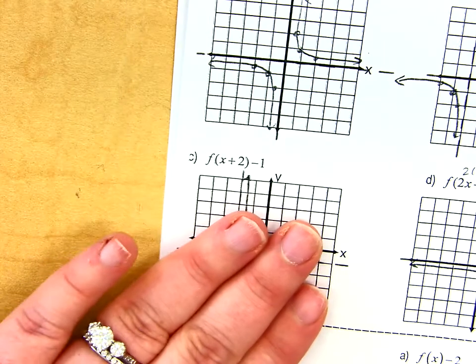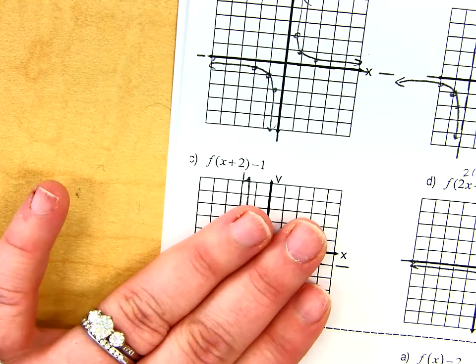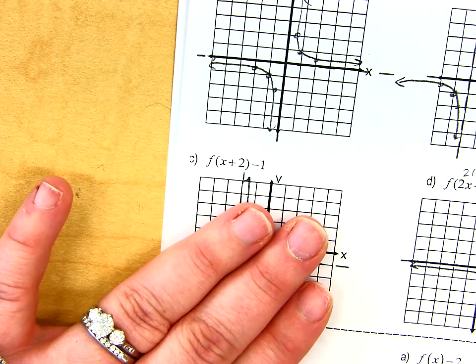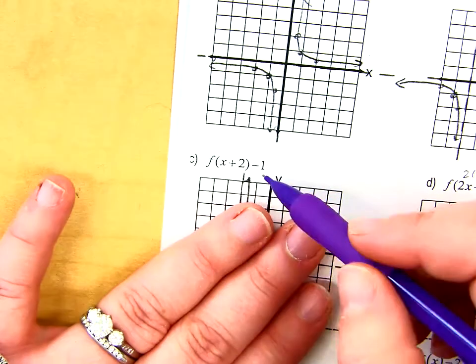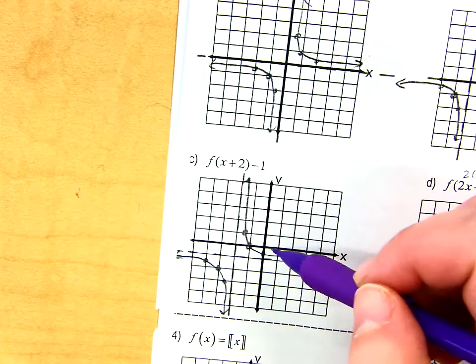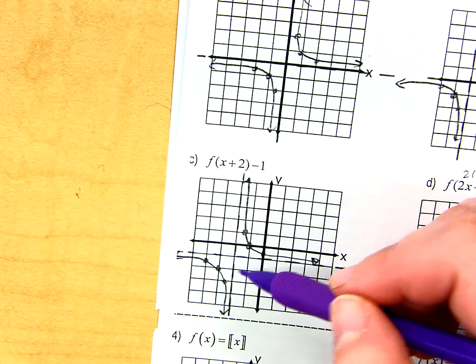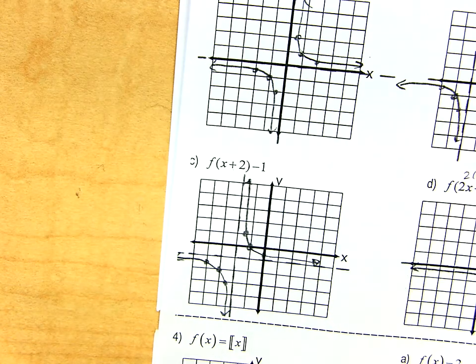C. What does that thing do? Down 1 and left 2. Picking that graph up. Left 2, down 1. Asymptotes move. Everything moves.